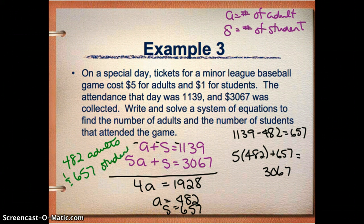So my answer is a word problem. I should always answer in words. So I think that 482 adults and 657 students were at the game. The thing I love about systems is how easy it is to double check.